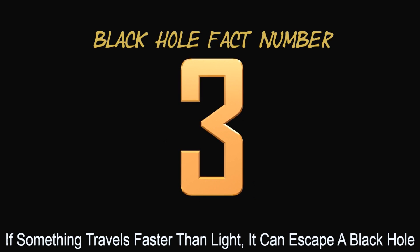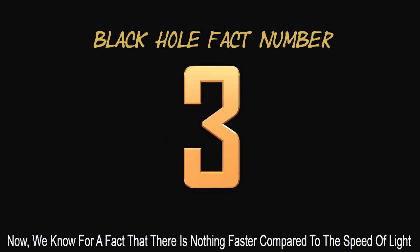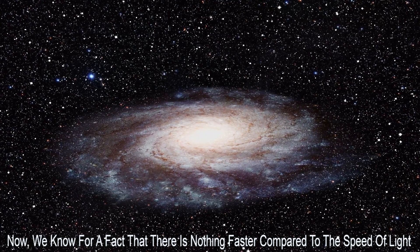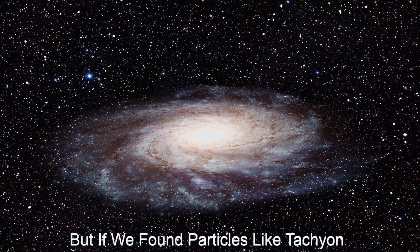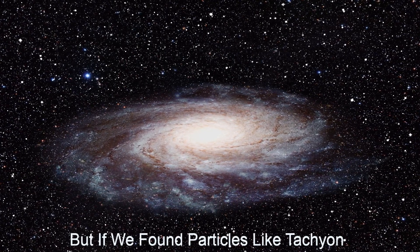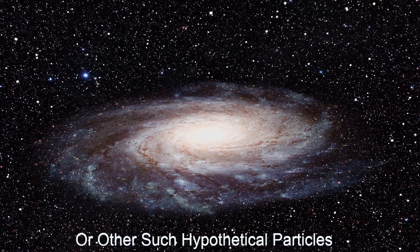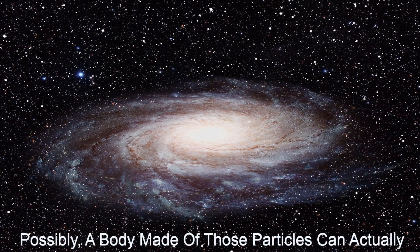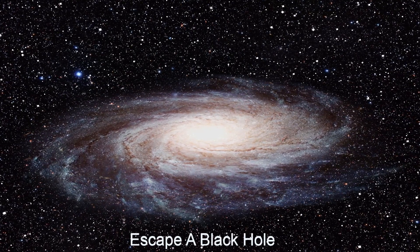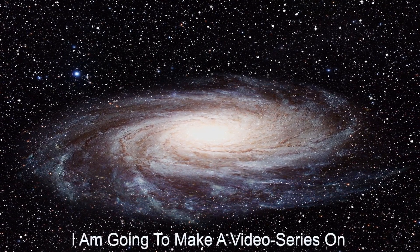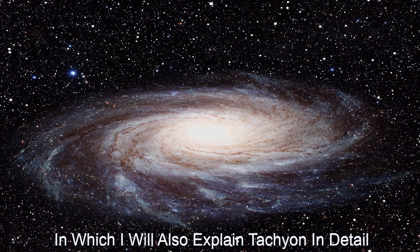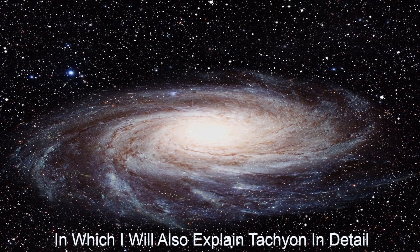If something travels faster than light, it can escape a black hole. Now we know for a fact that there is nothing faster compared to the speed of light. But if we found particles like tachyons or other such hypothetical particles, possibly a body made of those particles can actually escape a black hole. I am going to make a video series on faster than light travel in which I will also explain tachyons in detail.